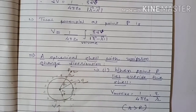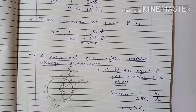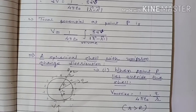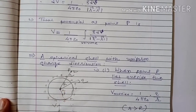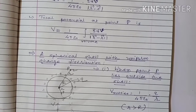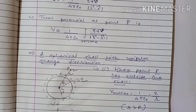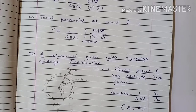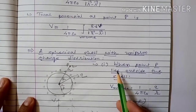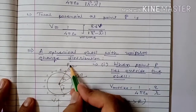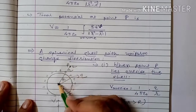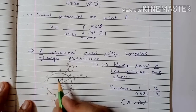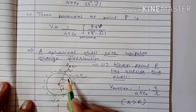Now, a spherical shell with uniform charge distribution. If a spherical shell is given and we have to calculate electrostatic potential at different points — outside the shell, on the surface, and inside the shell — we use the electric field results already studied. When point P lies outside the shell at distance r from the center, the radius of the spherical shell being R.